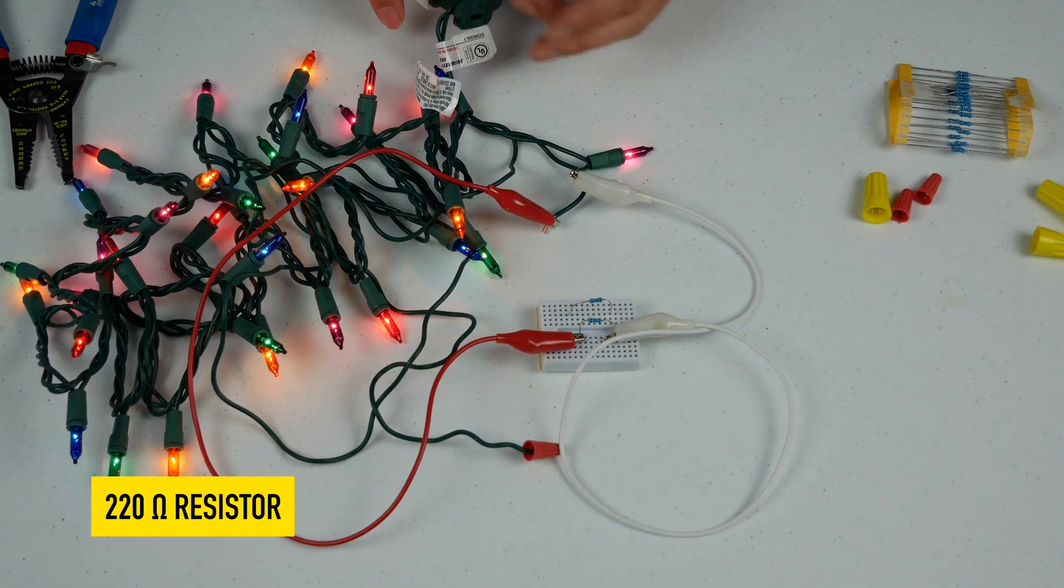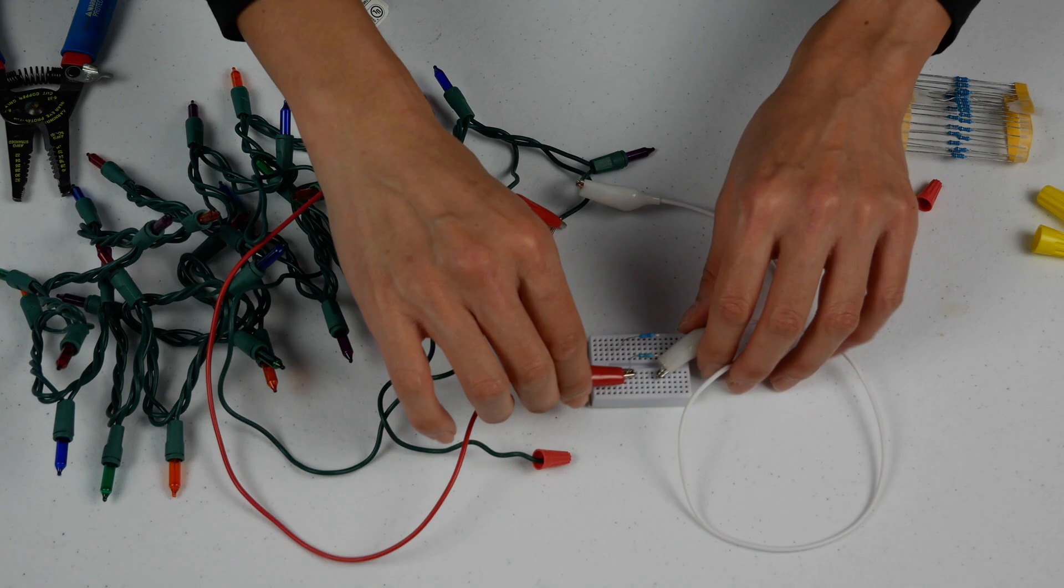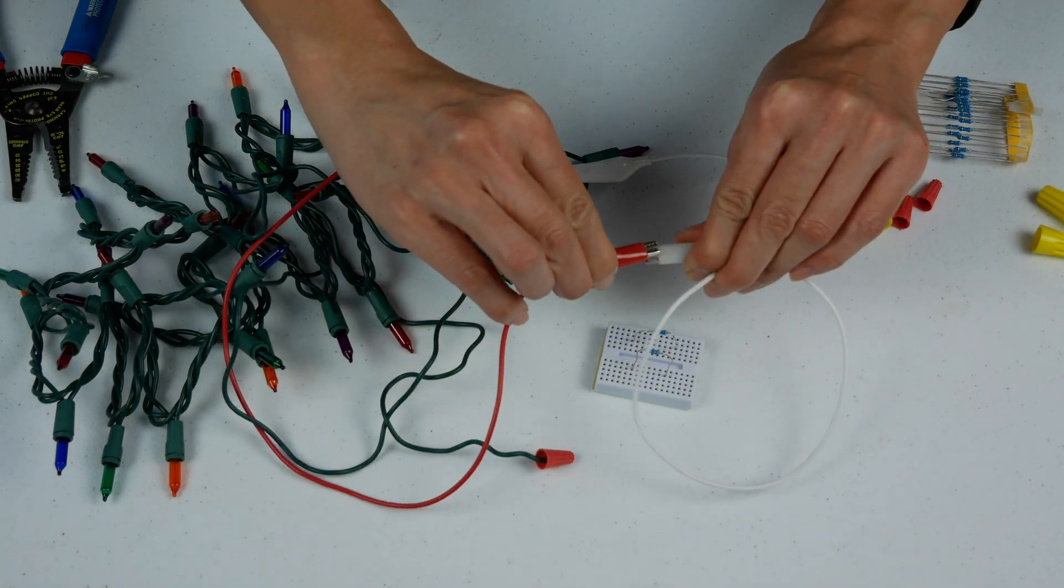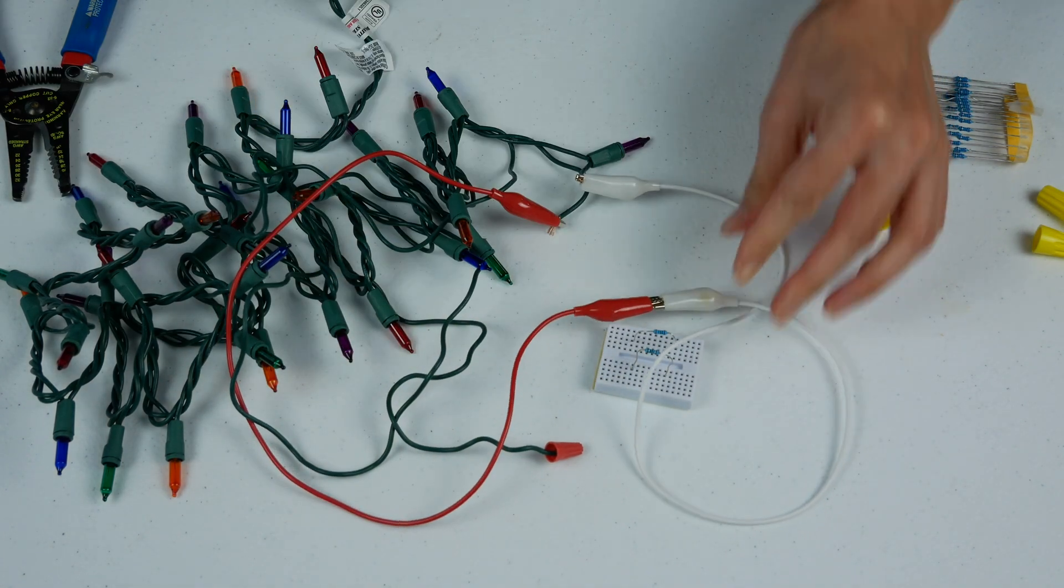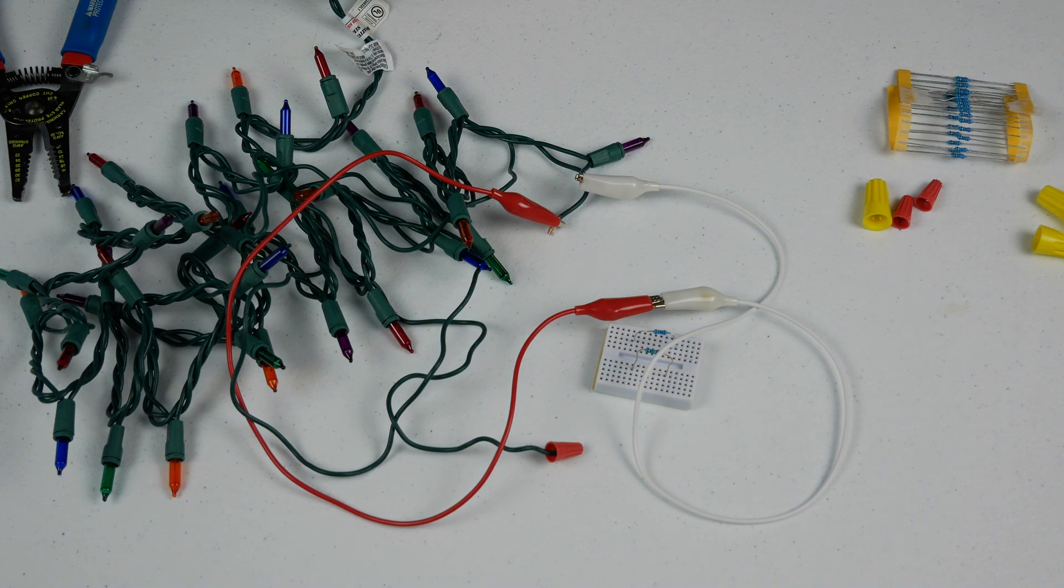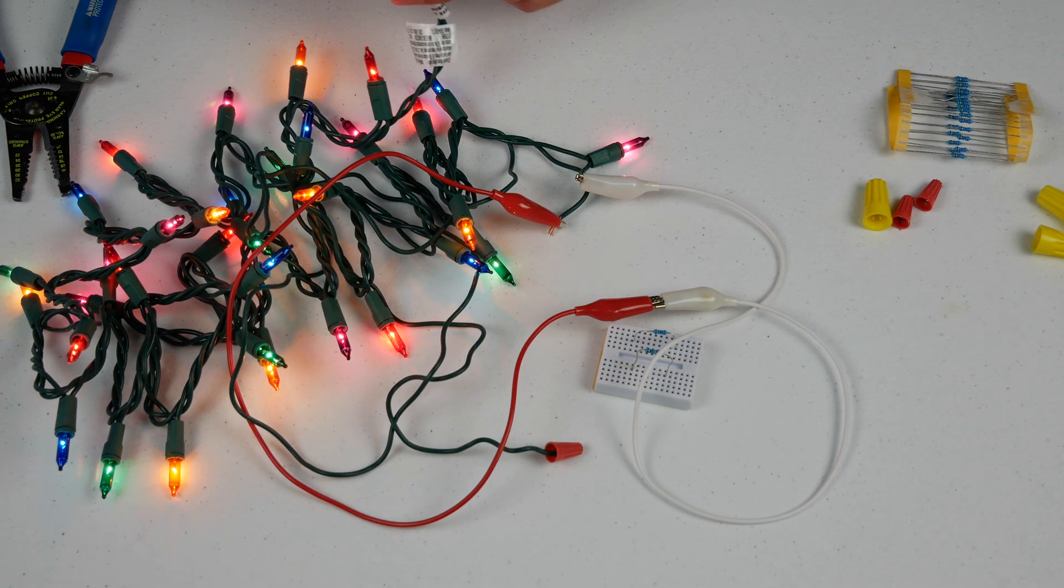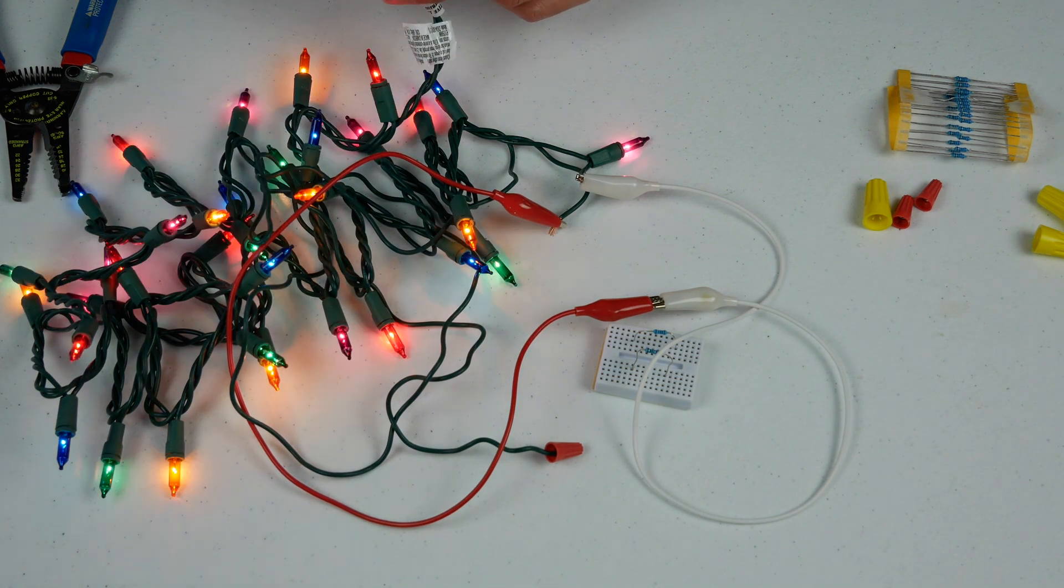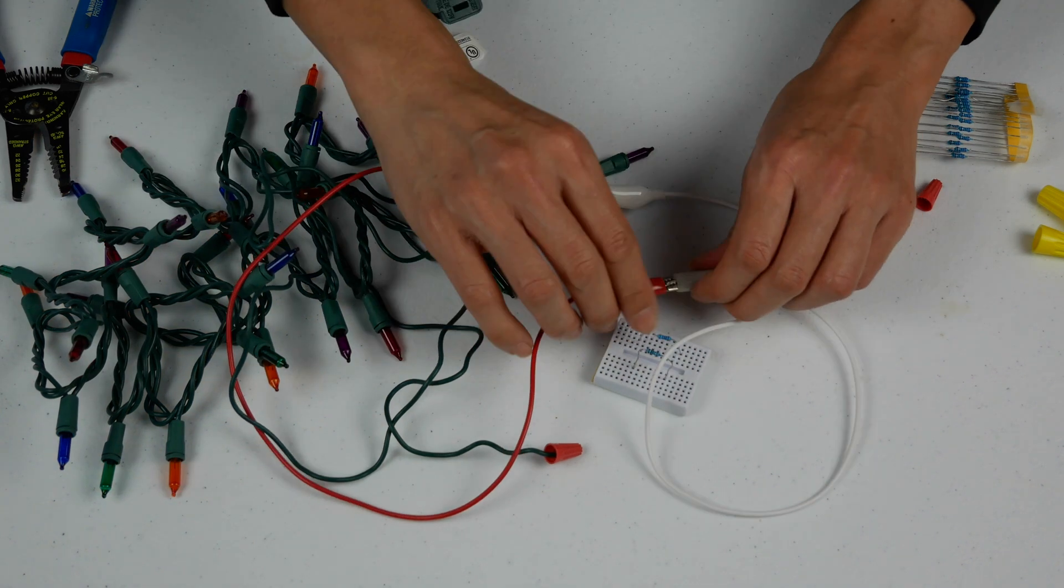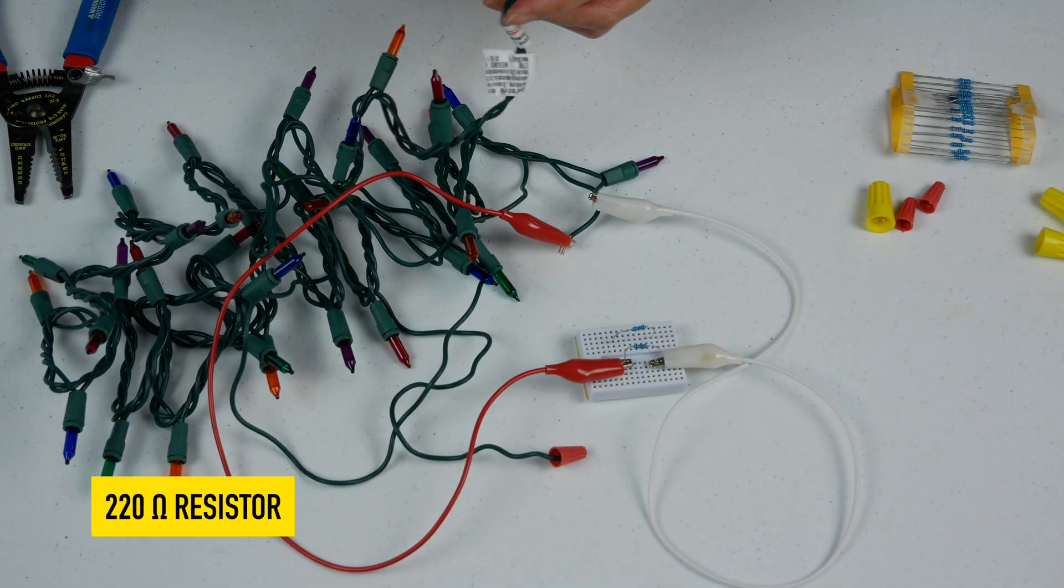And now you see the other resistor. Now if we do this without the resistor in the middle, the lights are going to be a lot brighter. Hopefully I don't burn everything out by doing this, but yeah, now the lights are a lot brighter without the resistor. With the resistor they're going to be just a little bit dimmer.